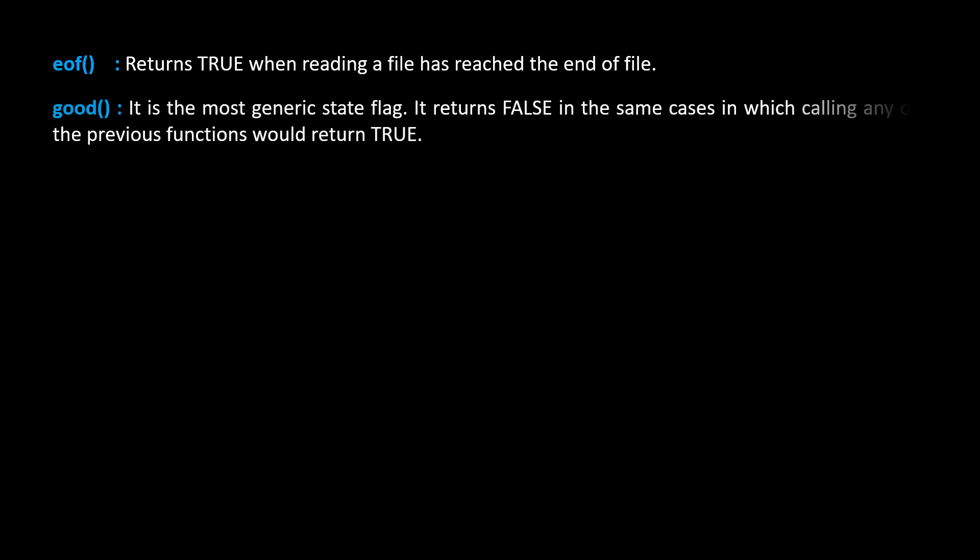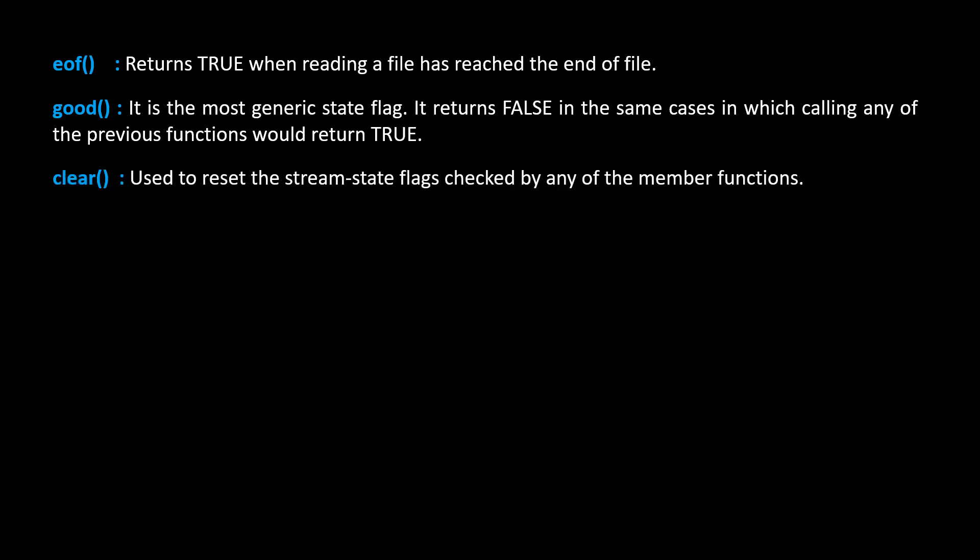The good function is the most generic state flag. It returns false in the same cases in which calling any of the previous functions would return true. The clear function is used to reset the stream state flags checked by any of the member functions.